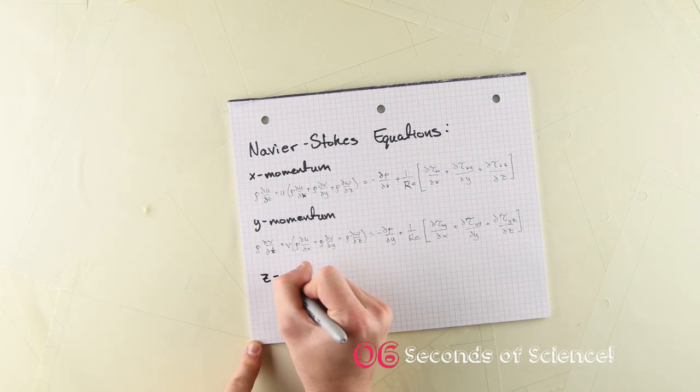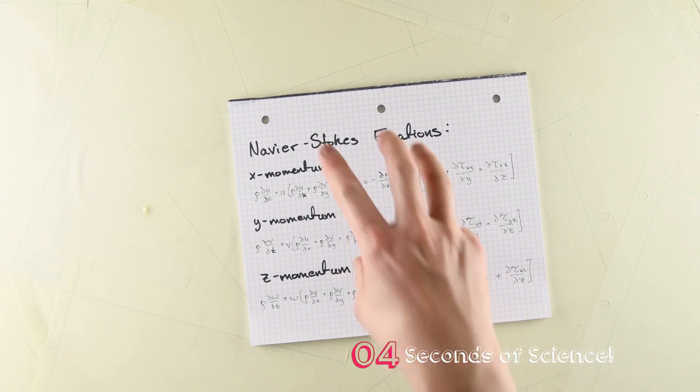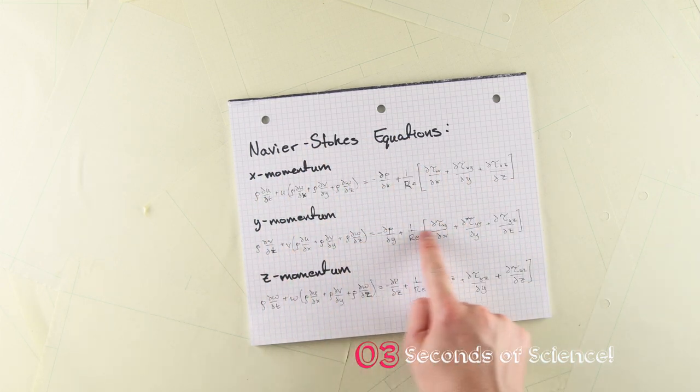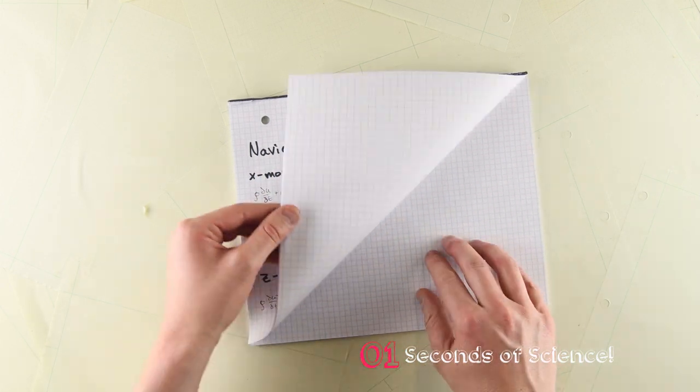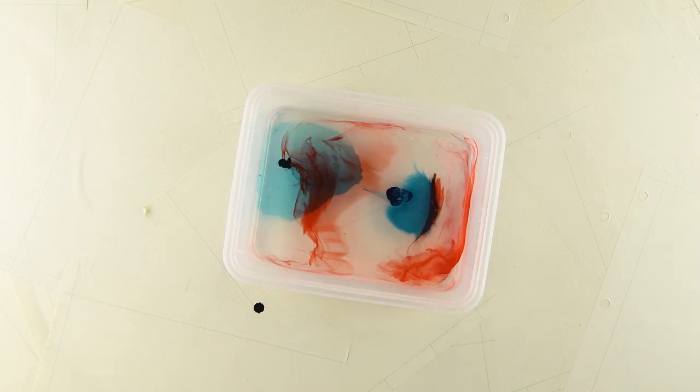Turbulence is so complicated that we don't actually know how to solve these equations. And it's so important that there's a million-dollar prize for the first person that can solve them. Turbulence is one of the big mysteries left in modern science. But maybe you'll be the one to figure it out.